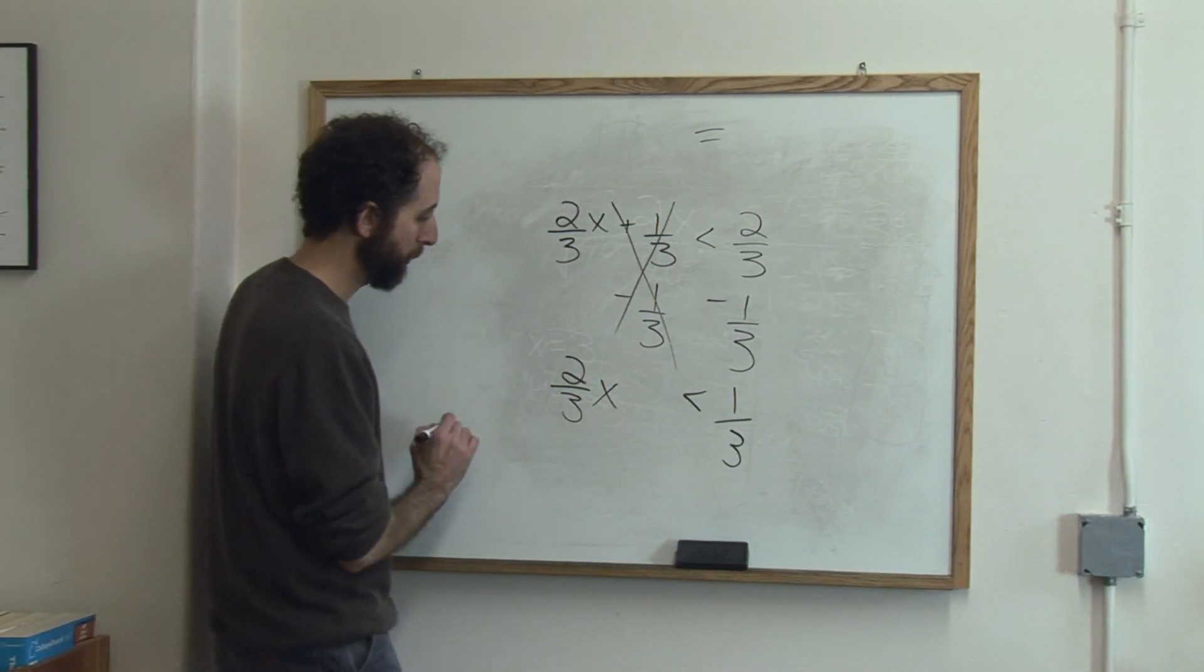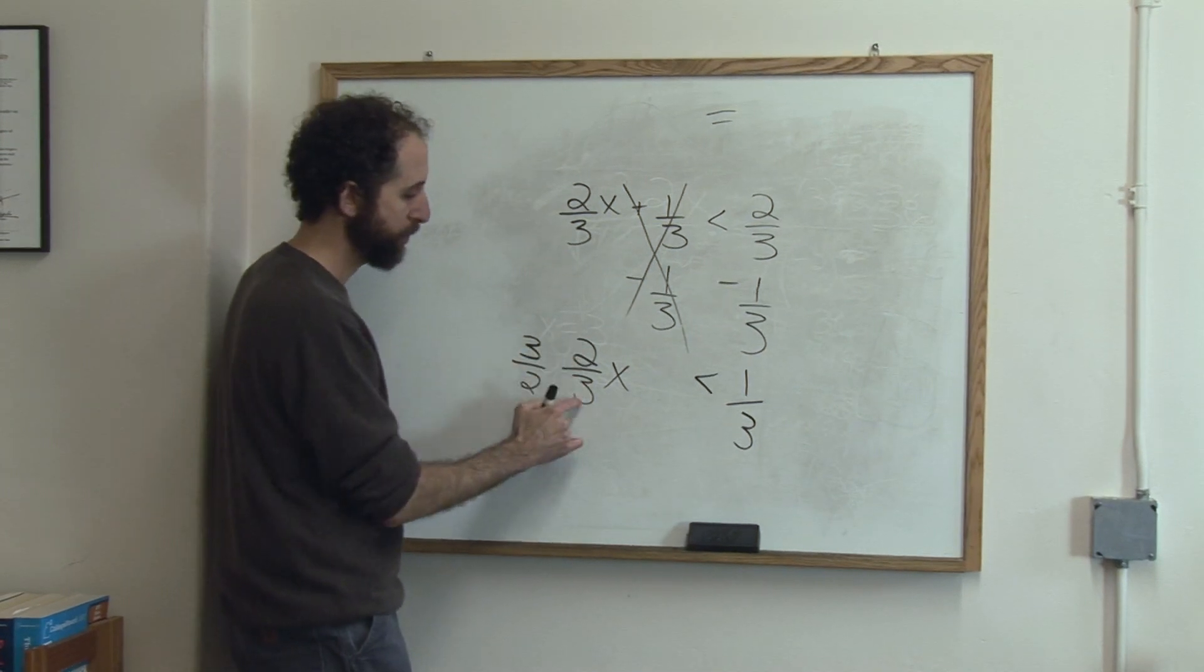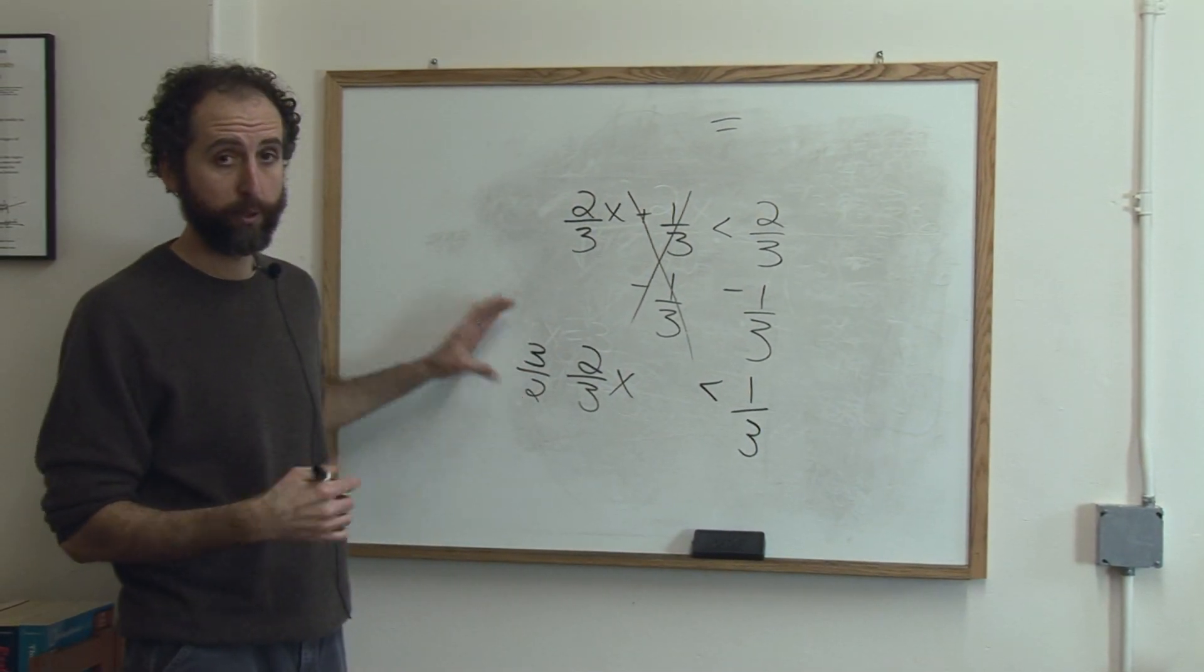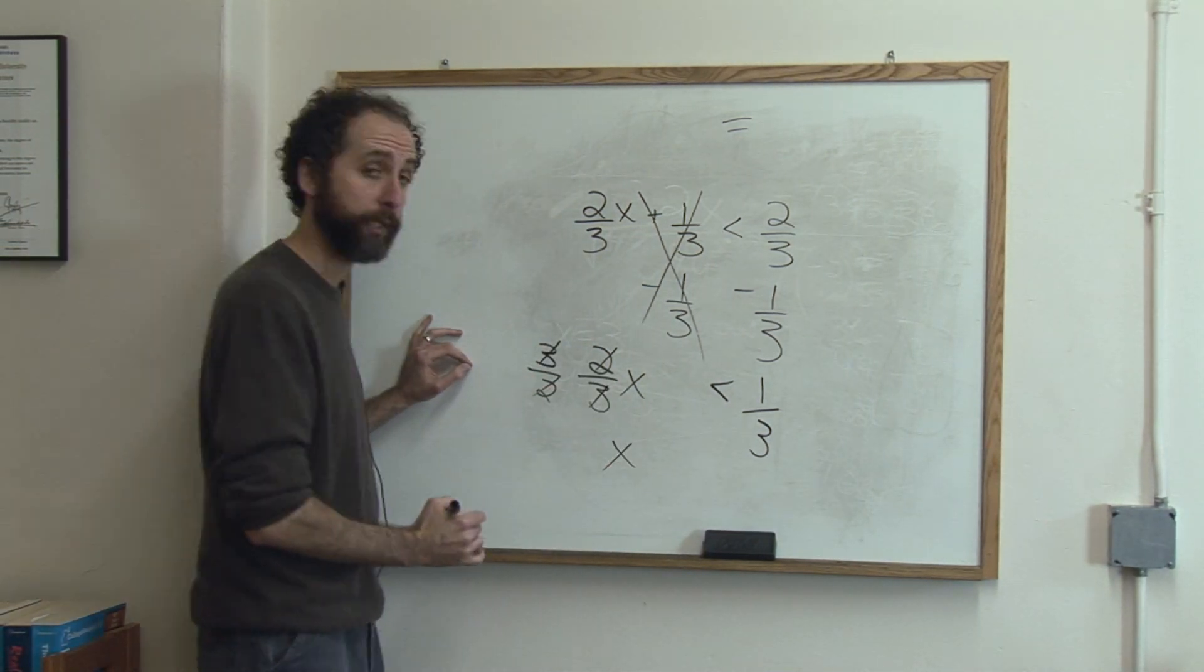Now we want to get x alone. The way we do that is we're going to multiply by 3 halves. If you have 2 thirds x and you want to get x alone, you multiply by the reciprocal. The reason we do that is because 3 over 3 cancels, 2 over 2 cancels, leaving me just x.